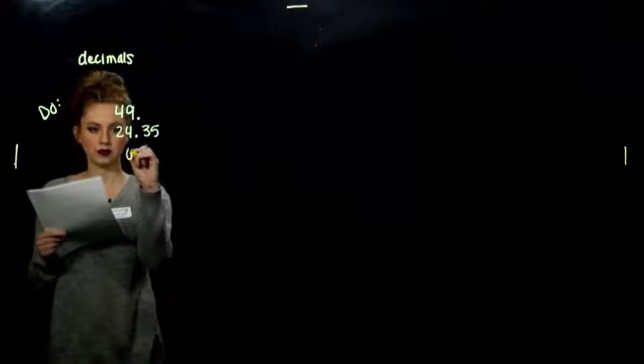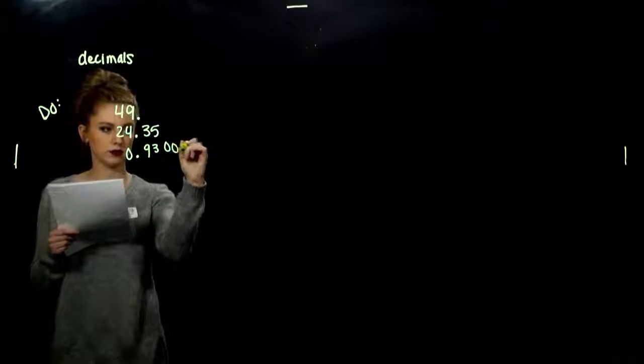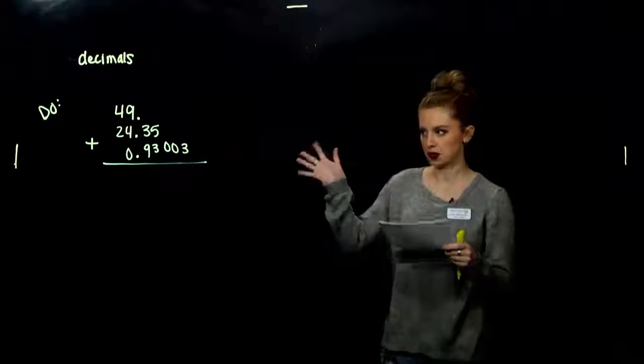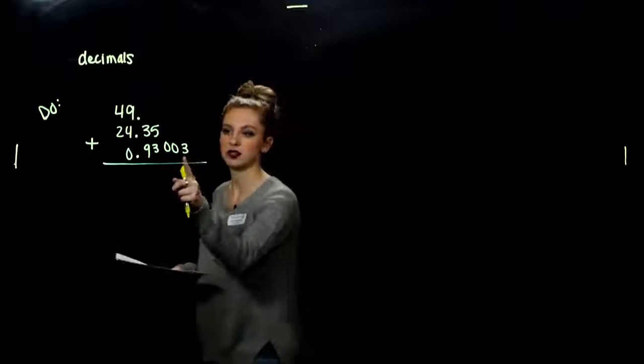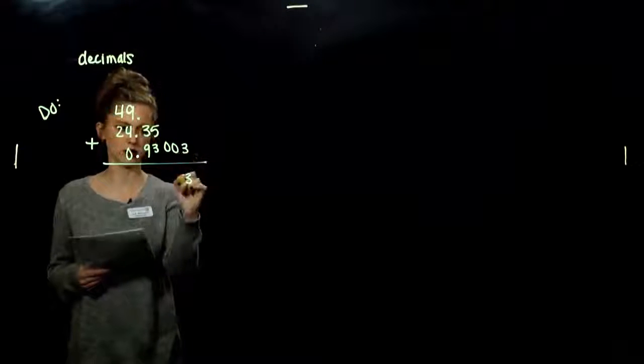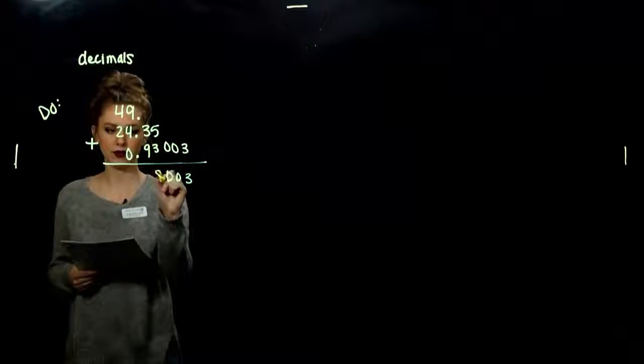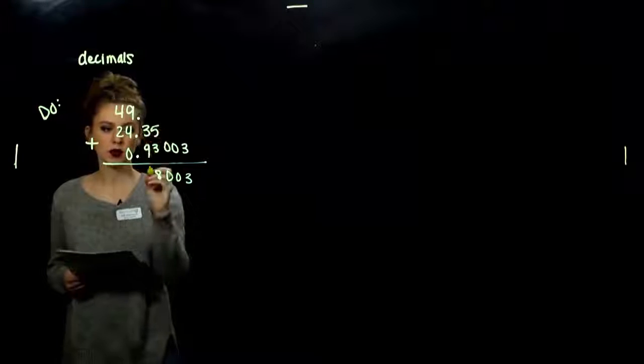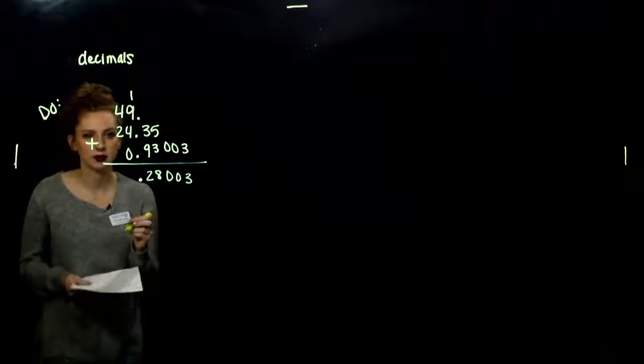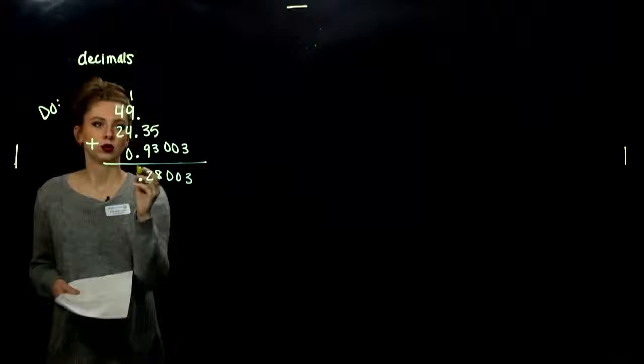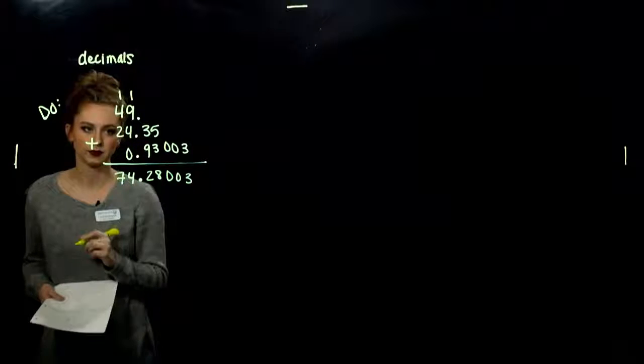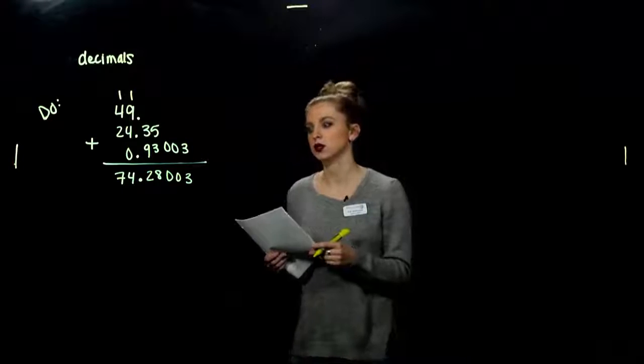I'm going to say 49, and I'm adding 24.35. We have to line up the decimals. And we've got 0.93003, adding all of those together. Starting from the smallest place value working our way in, we're only just going to add. 3 plus 0 is 3, 0, 0. Now I'm looking at 5, 6, 7, 8 all together in that column. 9, 10, 11, 12. So I've got a 2, and I need to carry the 1. Wherever the decimal point is, is where it's still going to stand in the end. In this row, we're looking at 14. So I've got the 4, carry the 1, 4, 5, 6, 7 all together. So adding those three numbers together, we're looking at 74.28003.